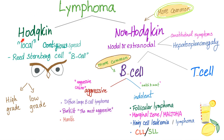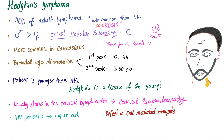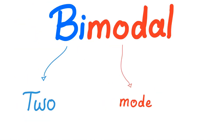But now we're talking about Hodgkin's lymphoma. Hodgkin's lymphoma has a bimodal age distribution. The first peak occurs among patients who are 15 to 34 years old. The second peak is among patients who are older than 50. What does bimodal mean?